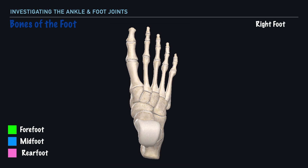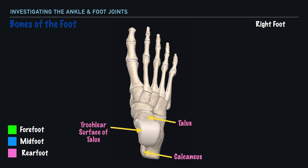In the rear foot, we have the calcaneus, or what we commonly refer to as the heel. And next, we have the talus, and what we also refer to as the trochlear part of the talus. We should make a note that it's because of this design that makes movements like dorsiflexion and plantarflexion possible.